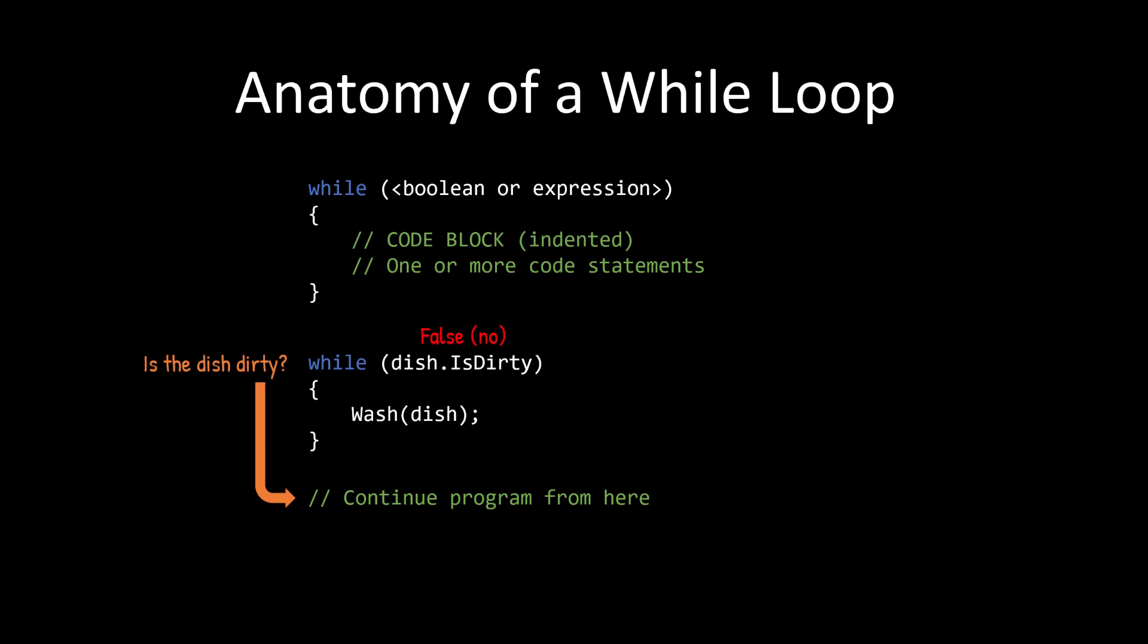Now, the interesting thing about a while loop is that if that initial condition is false, if it starts as false, so if we give it a dish that is already clean, it will skip the code block and continue the program. So there is no guarantee with a while loop that the code block will be executed. It can be entirely skipped.